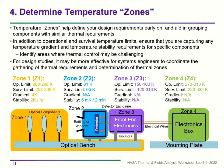For design studies, it may be more effective for systems engineers to coordinate gathering thermal requirements and determining thermal zones. For a typical optical instrument, optical components occupy one thermal zone, the detector — with more stringent requirements — is grouped into a different zone, and front-end electronics and the electronics box with more relaxed requirements go into other zones. In some cases, front-end electronics and electronics boxes can share a thermal zone and a common radiator.